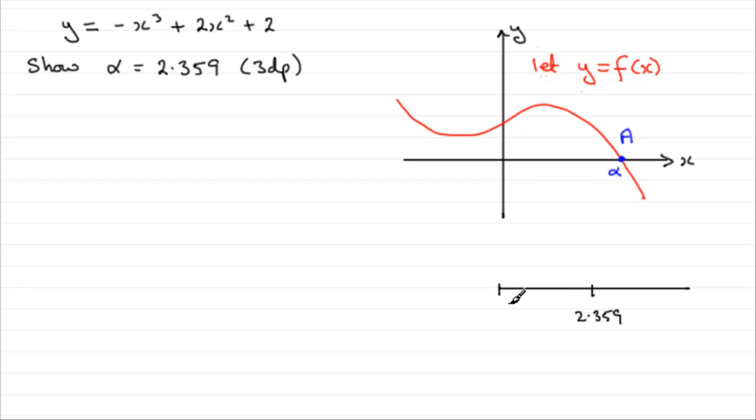If I took the first number before this one to three decimal places, it would be 2.358. And if I take the next number up from here to three decimal places, it would be 2.360. Now, if we're looking for our root alpha to be 2.359 to three decimal places, then there's going to be a minimum value and a maximum value halfway between these two values.